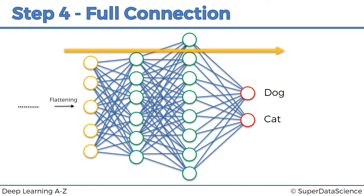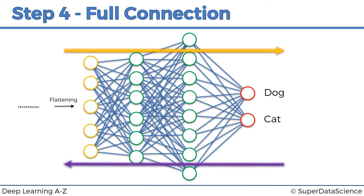Let's say a prediction is made — 80% that it's a dog — but it turns out to be a cat. Then an error is calculated. What we used to call a cost function in an ANN, and used mean squared error, in convolutional neural networks is called a loss function, and we use a cross-entropy function for that. We'll talk about cross-entropy and mean squared error in a separate tutorial. For now, we have a loss function telling us how well the network is performing, and we're trying to minimize it. The error is then backpropagated through the network, just like in ANNs.